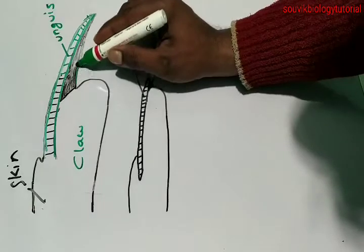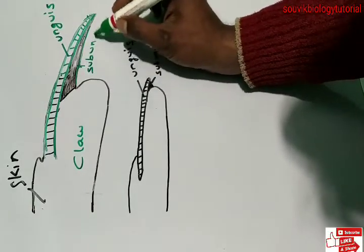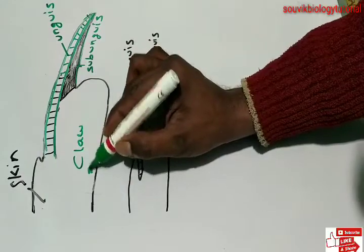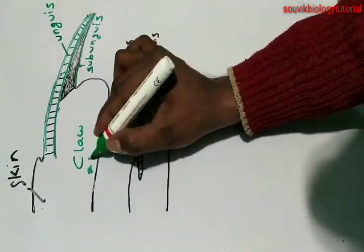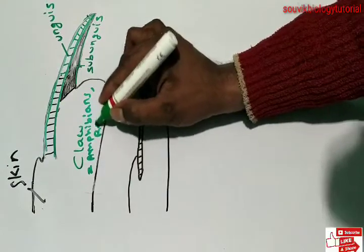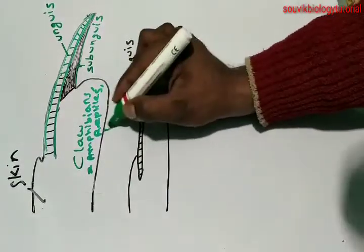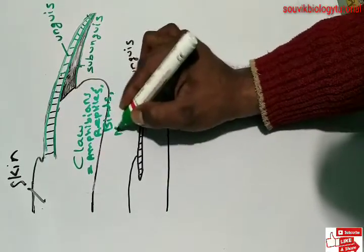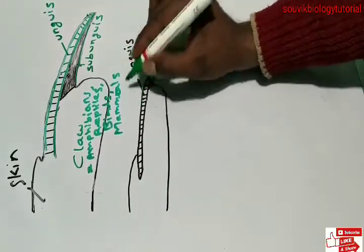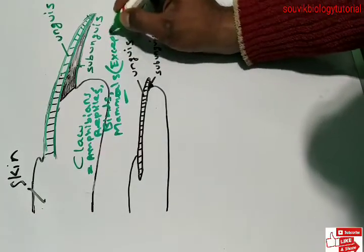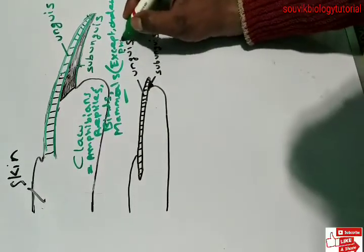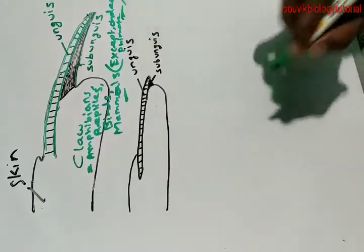This claw is found in few amphibians, almost all reptiles, birds, and mammals — except the order primates.